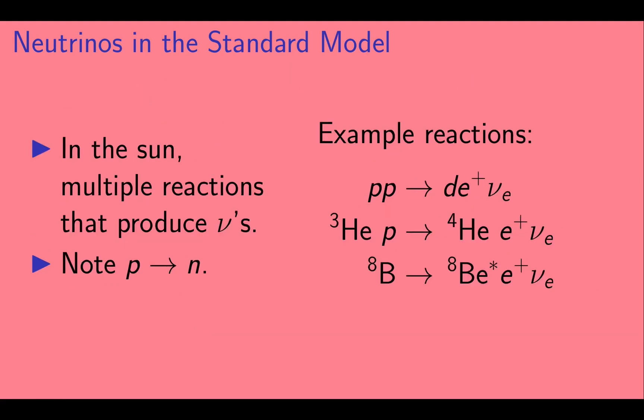In the Sun, there are many interactions that produce neutrinos. Here we list a few examples. If you look closely, you'll see that in each case, a proton is being converted into a neutron.